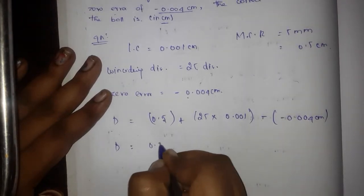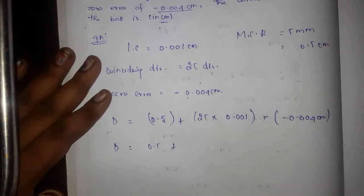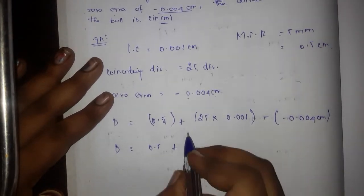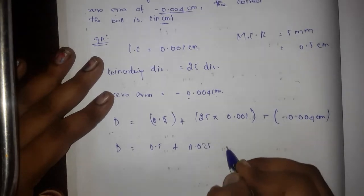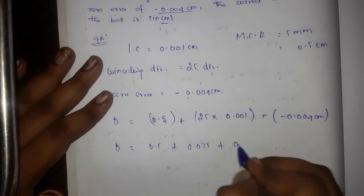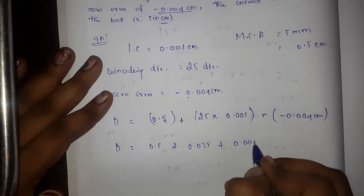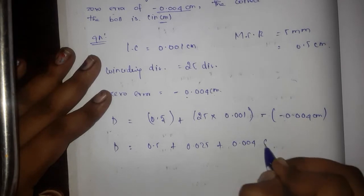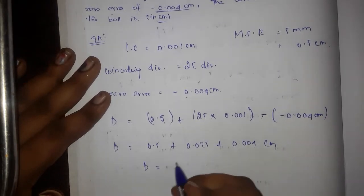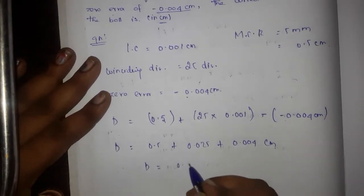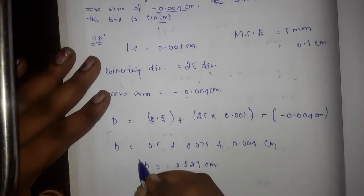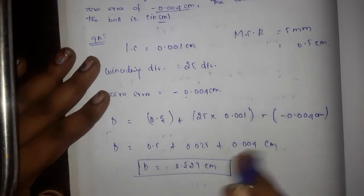So, D = 0.5 + 0.025 + 0.004 = 0.529 cm. This is the diameter of the ball.